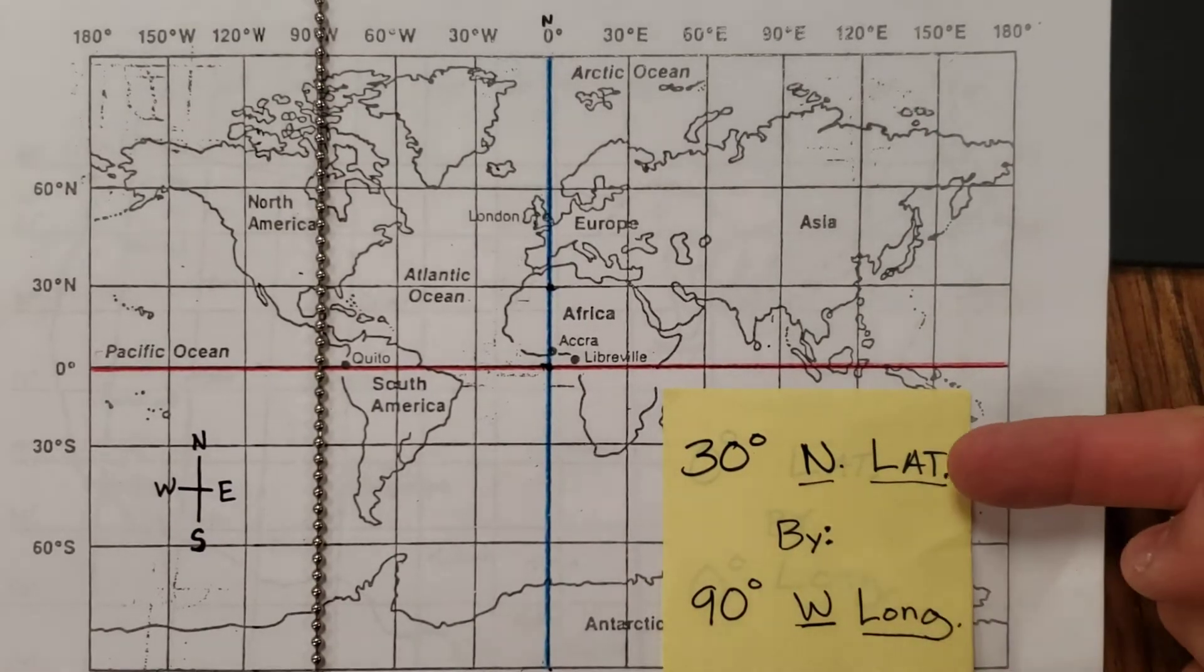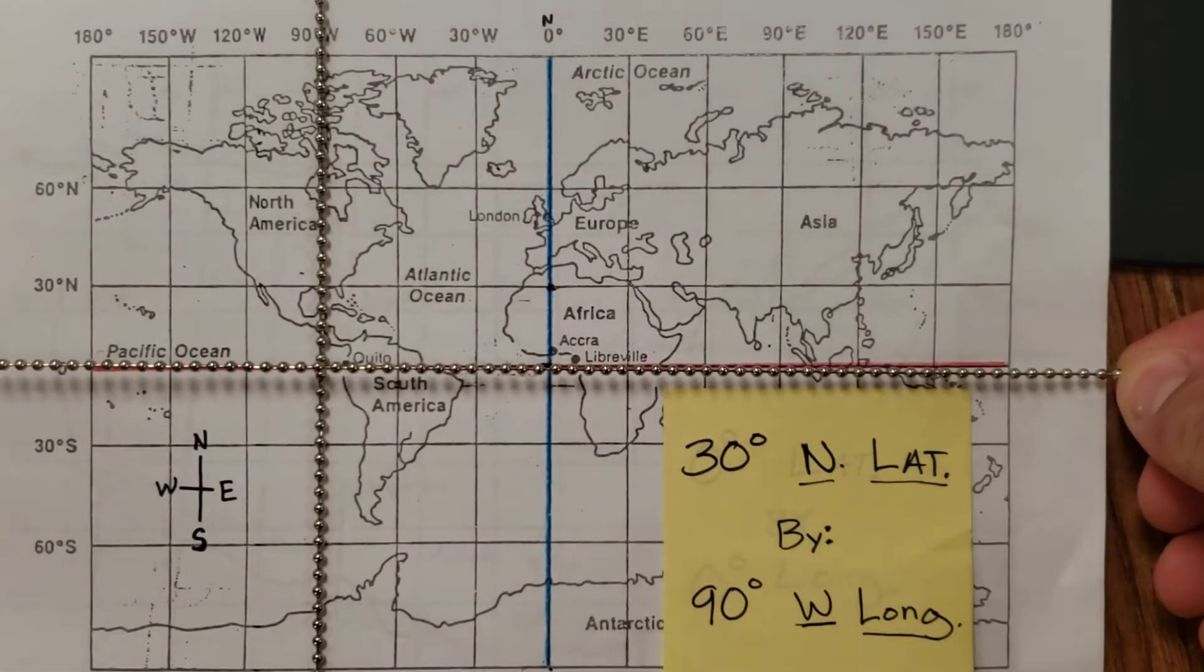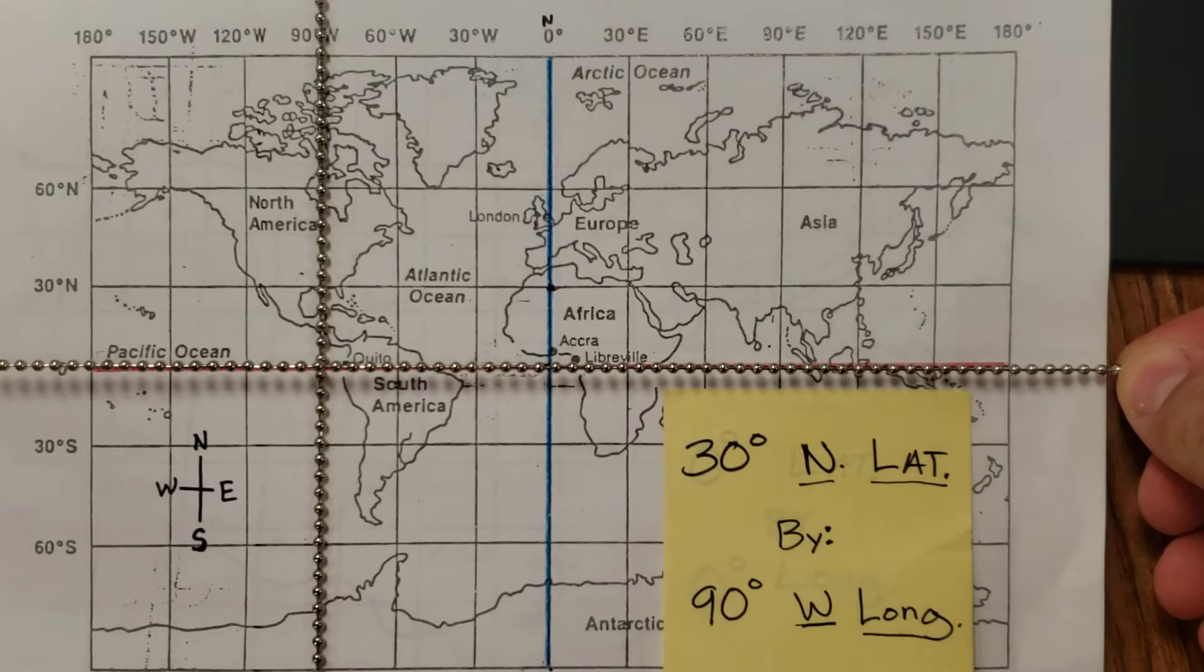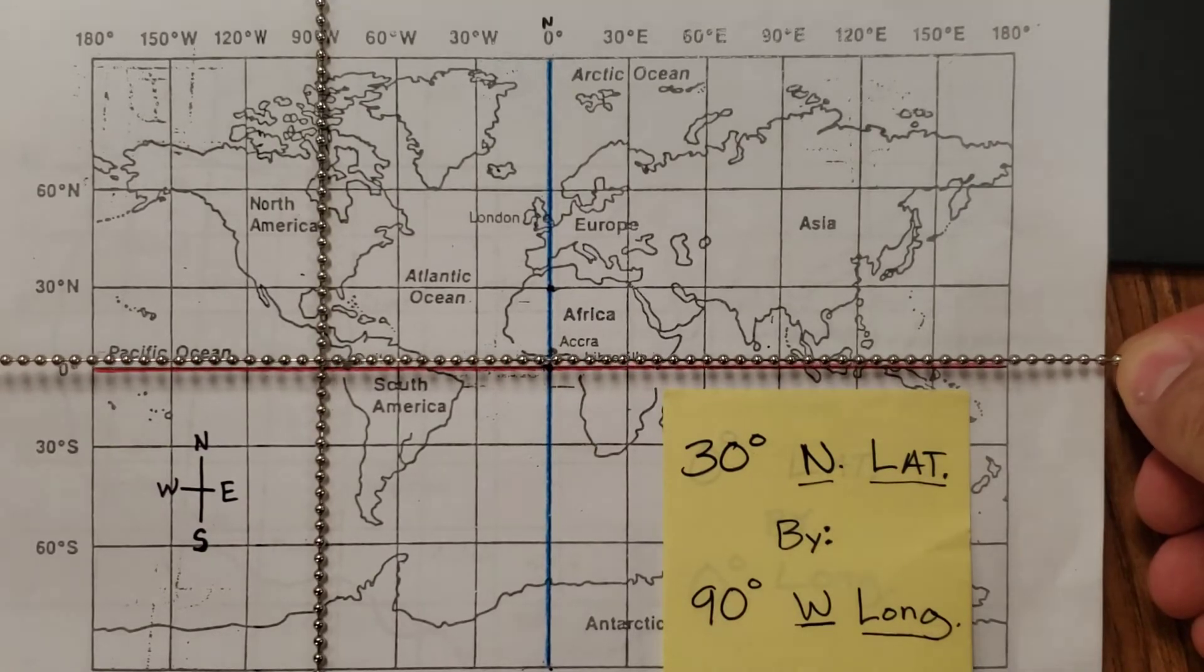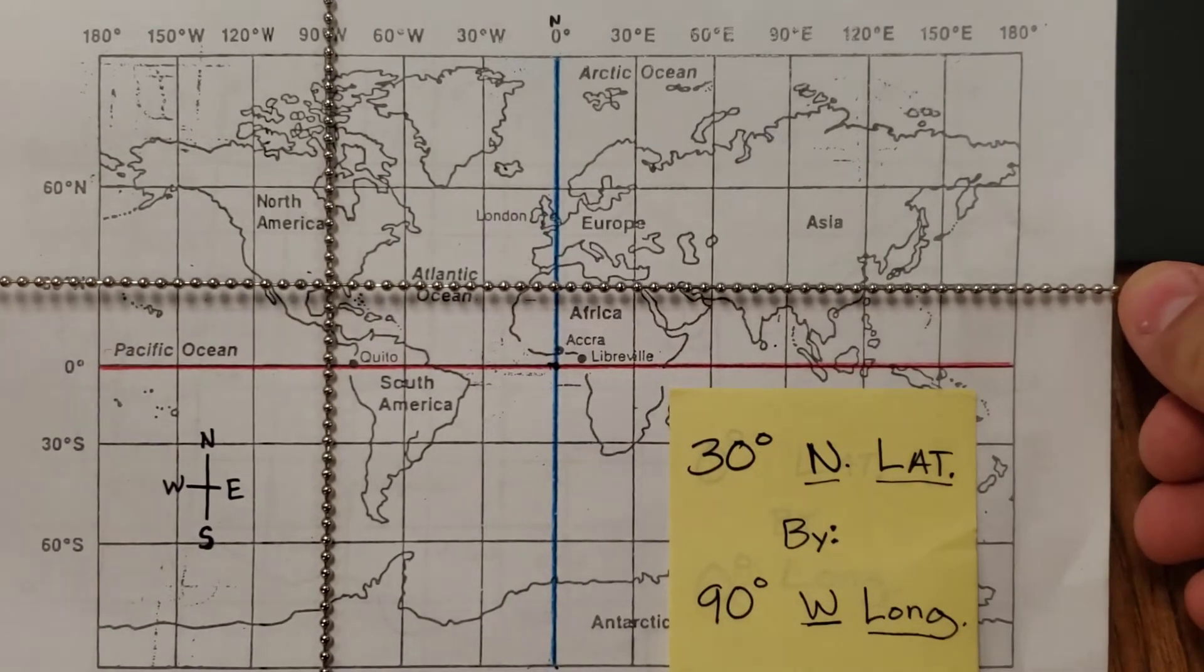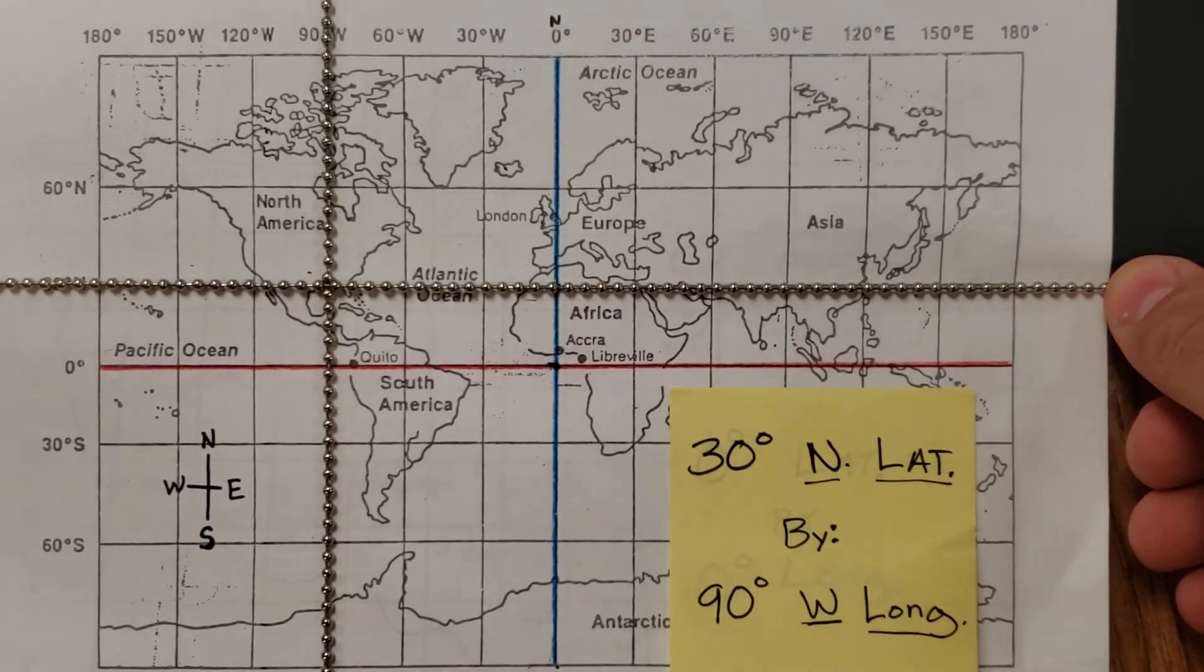Let's go do the latitude coordinate now. Latitude is this way like the equator. And do I go up to 30 or do I go down to 30? It says north. So looking at my compass rose there, I'm going to go up to 30 degrees. And welcome to the United States.